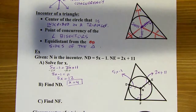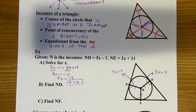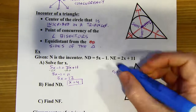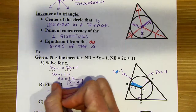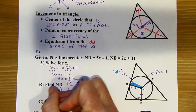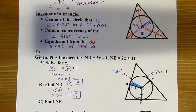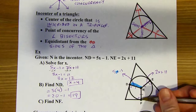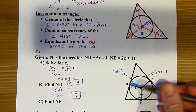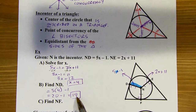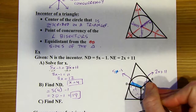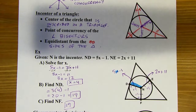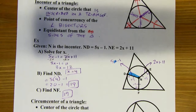Next, find ND. I can plug my x value in: ND equals 5 times 4 minus 1, which comes out to 19. Find NF — well, NF doesn't have an expression to plug into, but I already know all three distances are congruent. Since 5x minus 1 comes out to 19, all of these are going to have a value of 19 because they're all congruent. So the problems aren't difficult once you know what pieces are congruent.